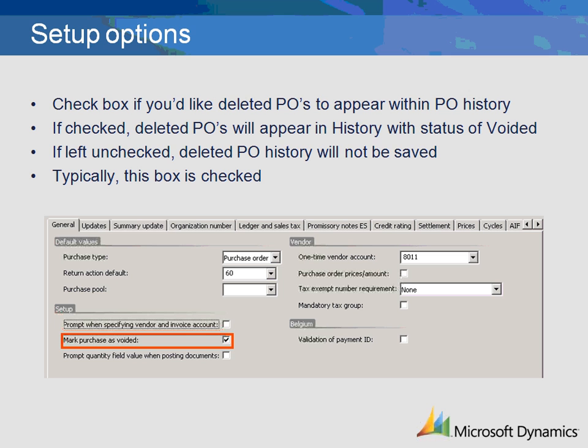With the Mark Purchase as Voided checkbox, you are deciding if deleted purchase orders will appear within the purchase order history file. When checked, these deleted purchase orders will appear with the status of Voided. If unchecked, deleted purchase orders will not be saved. Most companies want a historical view of purchasing activity, therefore they check this box.